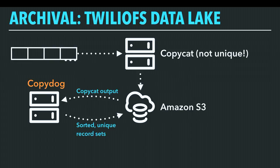But it's just the first step in our data archive, because Copycat's output is not guaranteed to be unique or in order — distributed systems. So we run a system called Copydog. It's a Spark job and what it does is take the raw topic data from Copycat in S3 and organize it for us. This is the first place that topic metadata comes into play — the deduplication and ordering configuration drives Copydog, giving us a verified, sorted, and deduplicated archive of all our topic data in S3.